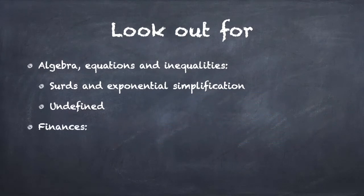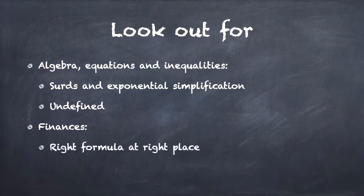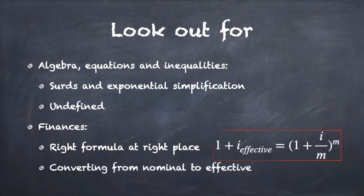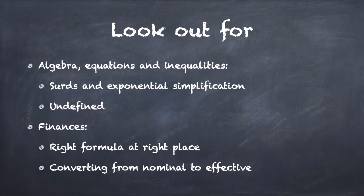For financial mathematics, there are two things you need to look out for. First of all, using the right formula at the right time. The moment you use the wrong formula at the wrong place, there's maybe one mark for you. Even if you get all the substitution and manipulation right, wrong formula—sorry, one mark for subbing in if you're lucky. Make sure you have the right formula for the right situation. Also look out for nominal to effective, the converting of the interest rates, because they don't give you the formula. Make sure that you've got that formula down.